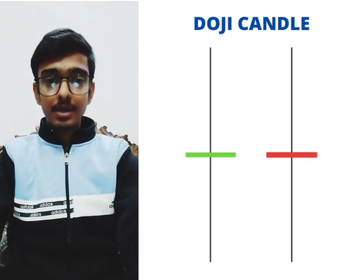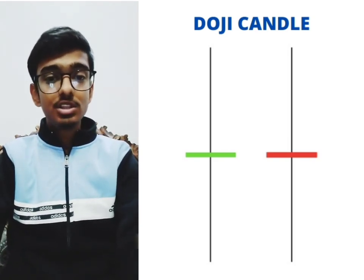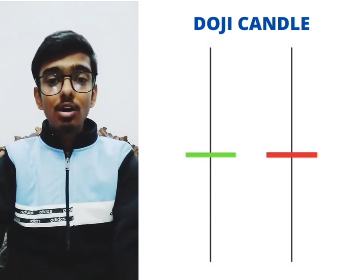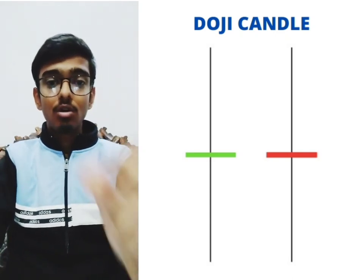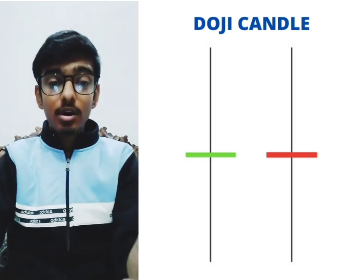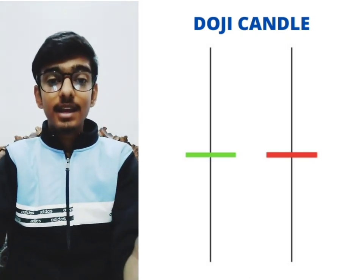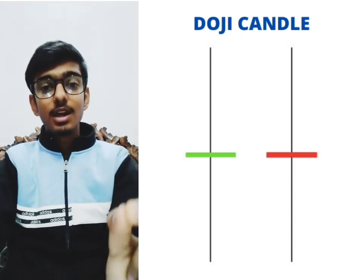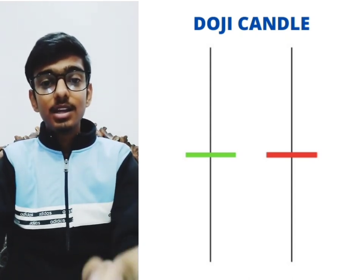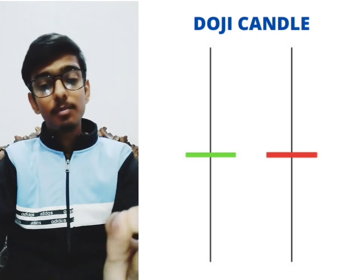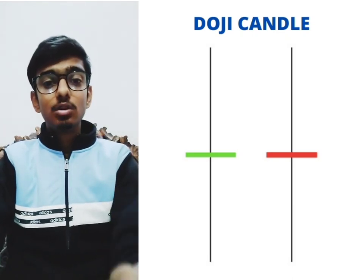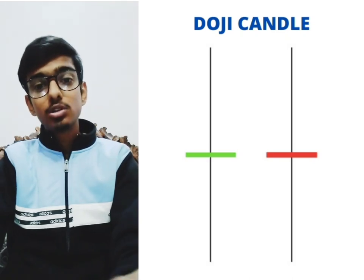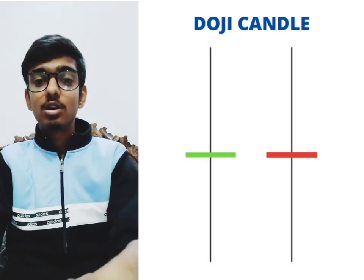There is one special case called doji formation. If the body of a candle is very small or negligible, then this formation is known as doji formation. It shows uncertainty in the movement of a stock or price. If the doji formation is forming repeatedly, it also represents a reverse boxing formation.